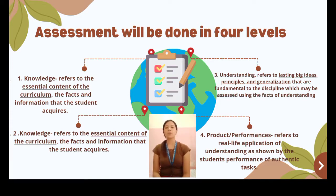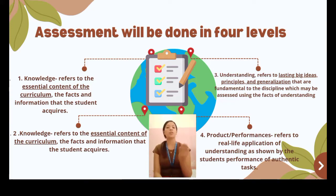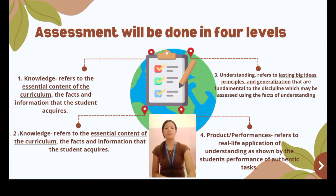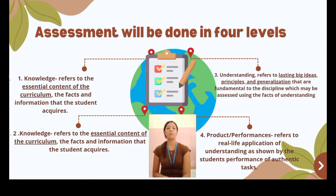The first level is knowledge, which refers to the essential content of the curriculum — the facts and information that students acquire. The second level is process, which refers to the cognitive acts that students perform on facts and information to come up with meanings and understanding. The third level is understanding, which refers to the lasting big ideas, principles, and generalizations that are fundamental to the discipline, assessed using facts of understanding. And lastly, products and performances refers to the real-life application of understanding as shown by students' performance of authentic tasks. Those are the four levels, weighted accordingly per DepEd Order No. 31 Series 2012.